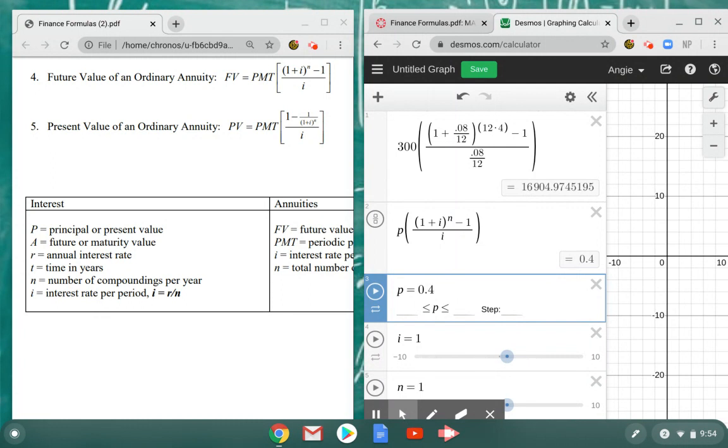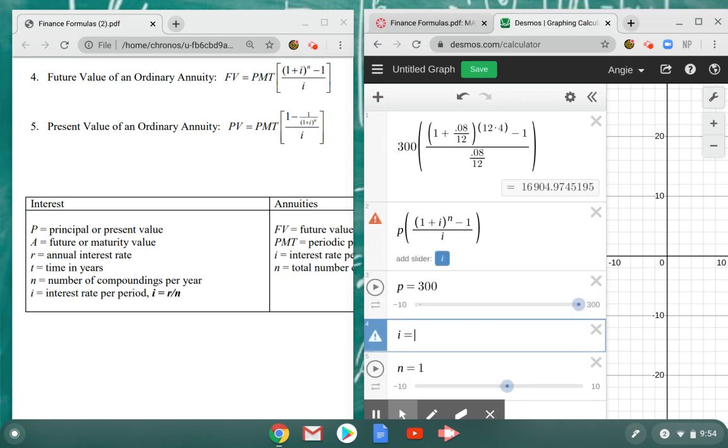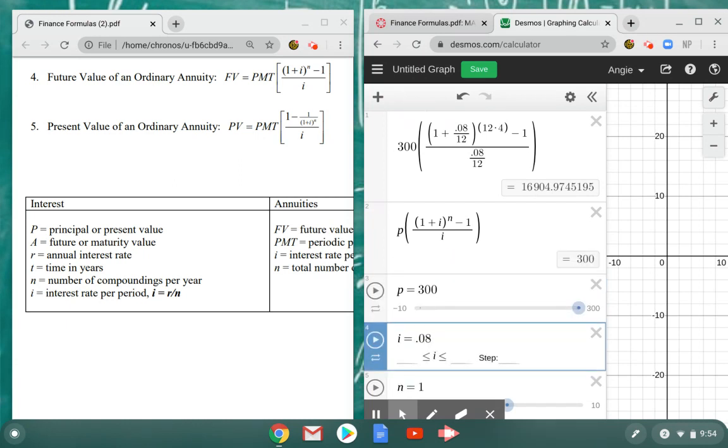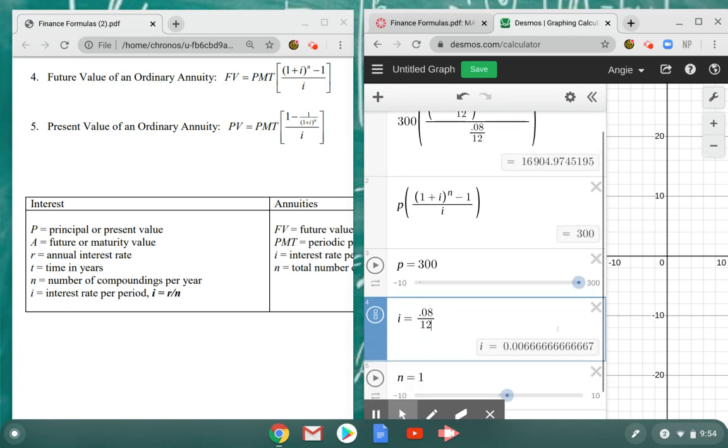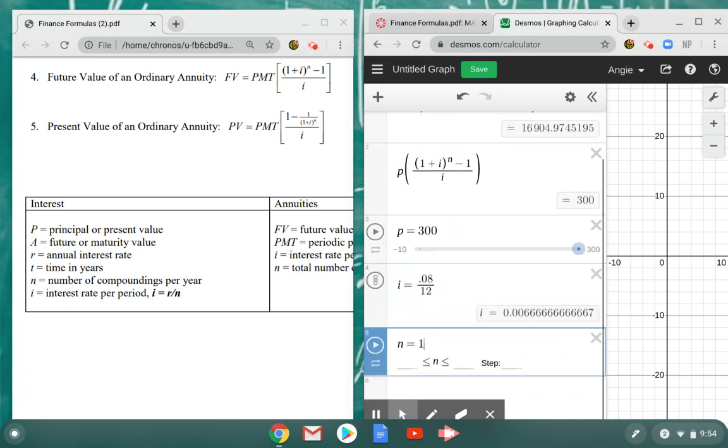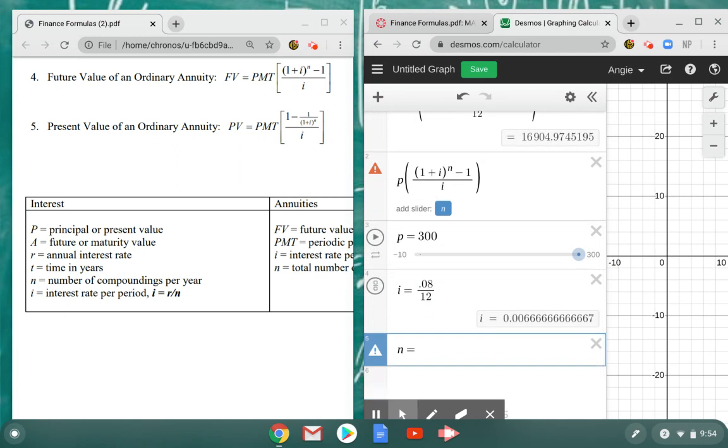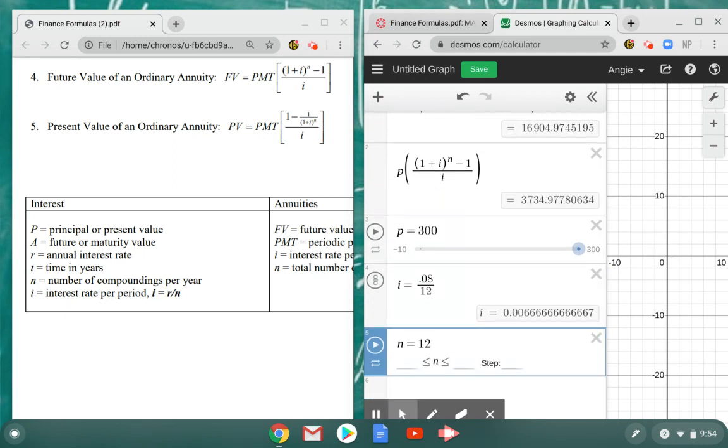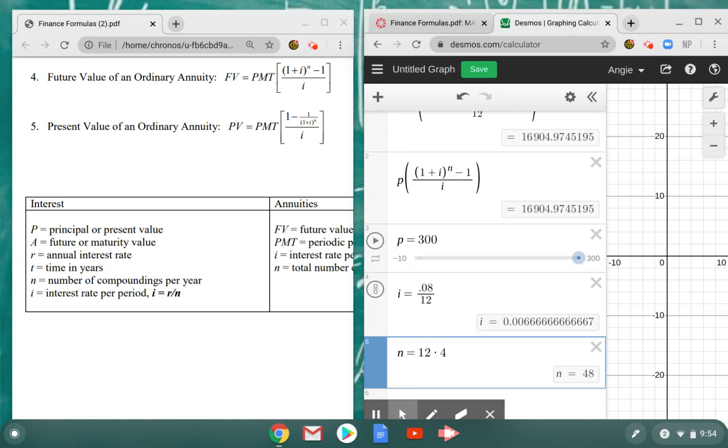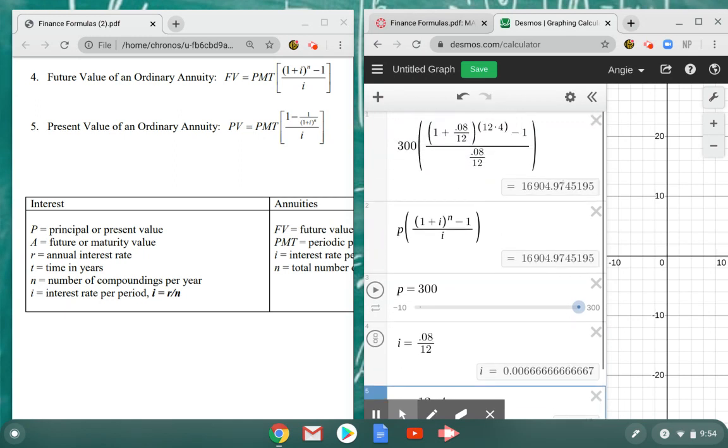Instead, I'm going to type over the value in each of these sliders. If I go back up to that initial example, we had $300 payments. My periodic interest, I can do the calculation right here: 0.08 divided by 12. We were doing this monthly for four years, so monthly payments times four years, and it gives me that 48 there.